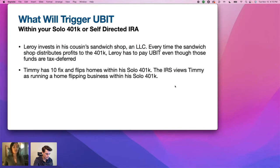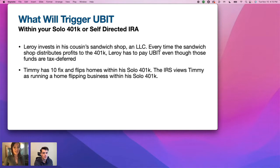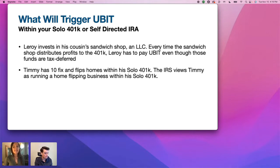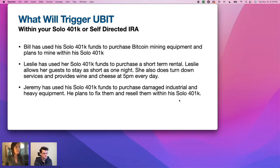UBIT examples: Leroy invests in his cousin's sandwich shop LLC — every time the shop distributes profit to the 401k, Leroy has to pay UBIT because he's investing in an operating business. Timmy has 10 fix-and-flip homes within his Solo 401k — the IRS views that as running a home flipping business. One to three rehabs and resells might be okay, but an excess number is more business than passive investment. Bill uses Solo 401k funds to purchase Bitcoin mining equipment — that is an active business and triggers UBIT.